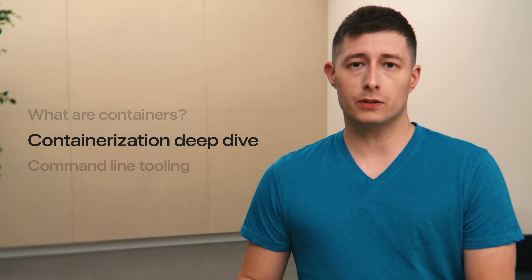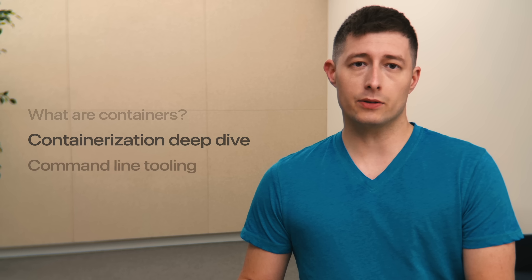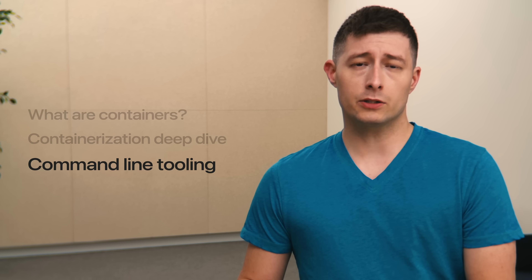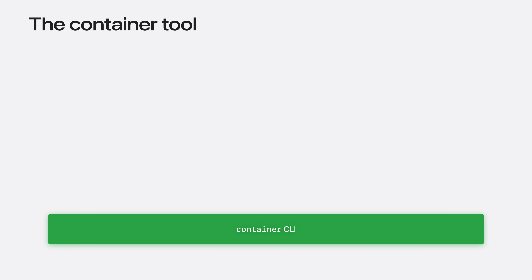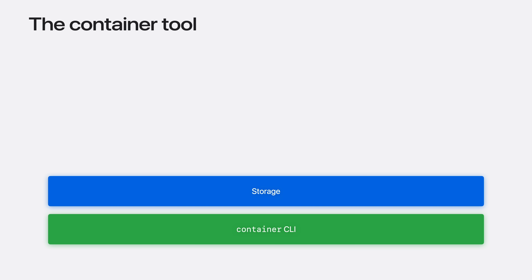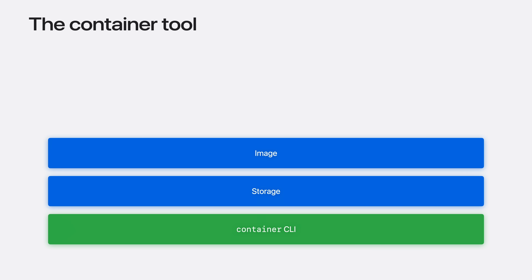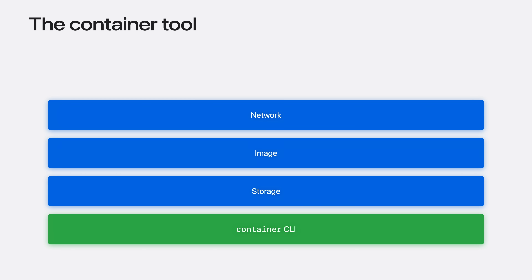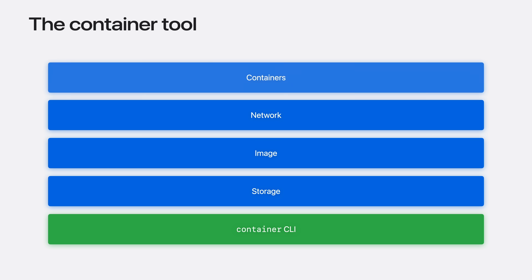Containerization combines all of these core components, offering a powerful API for building solutions around Linux containers. Now, let's look at a command line tool which provides a simple and robust way to run containers. The container tool consists of a CLI and XPC services built using the containerization APIs. These services provide support for storage, image management, and network services that allocate IP addresses to containers and handle DNS requests, as well as the management and runtime of containers.